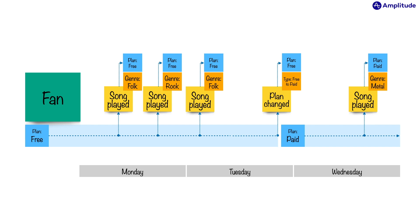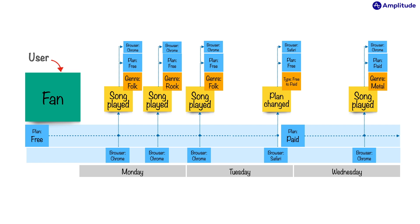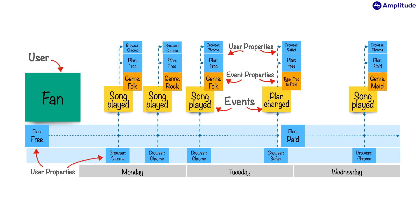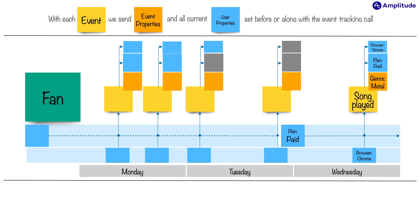This isn't the only thing about the user or their device we track. We also set and send some information along with each event, like what browser they used. They used Chrome on Monday and Tuesday morning, and Safari when they changed their plan, and Chrome again on Wednesday. So what do we actually call these things? Our green sticky is the user, our music fan. The yellowish sticky notes are events — the things that happen, the actions that we care about. The orange stickies are event properties; they give us more context about these actions. And the blue stickies are information about the user and/or their device — we call these user properties. The important point is that with each event, we send event properties and all the current user properties set before or along with the event tracking call.